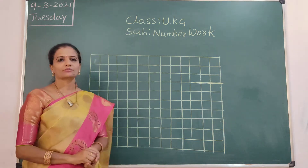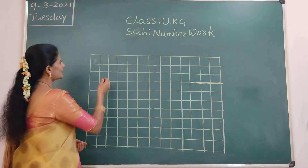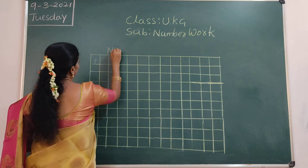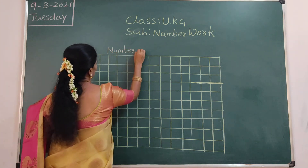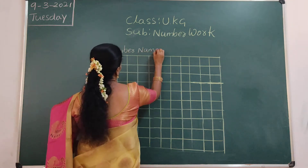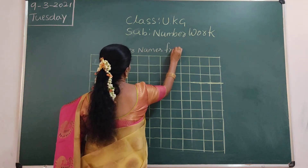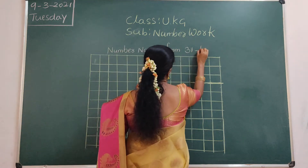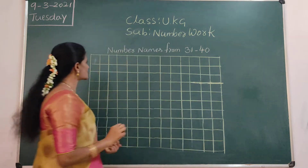Take out your number 1 square line book. Ok children, write the heading. Take out your notebook — number names from 31 to 40. Ok, so we can start children.